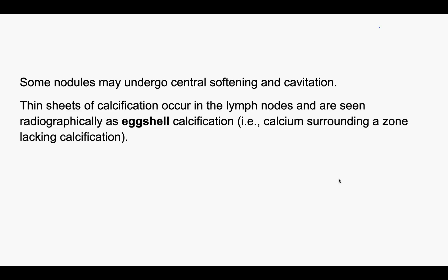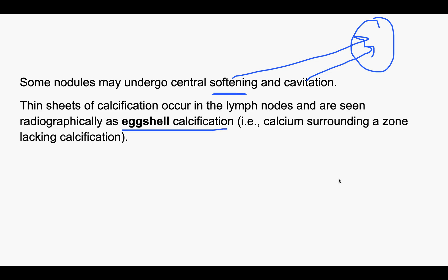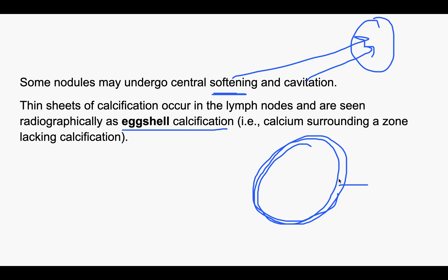These nodules, in the center, can also undergo softening or cavitation. Radiographically, you will see eggshell calcification — similar to an egg, the outside is calcified and the inside is not calcified. This is eggshell calcification which is seen in silicosis, where calcium surrounds a zone of non-calcification.